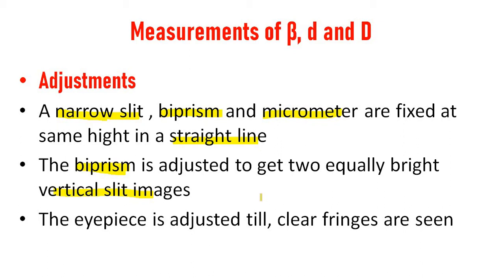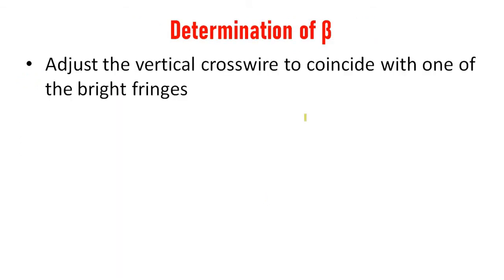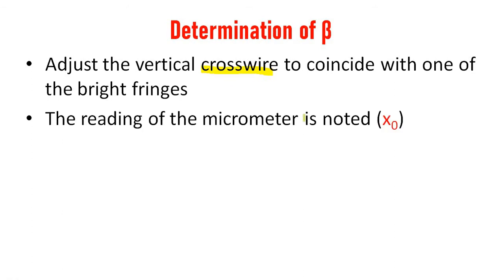We need to calculate beta. For that we need to find some values. We need to fix the center vertical crosswire to coincide with one of the bright fringes. Then take the reading in the micrometer and the reading is noted as x0.